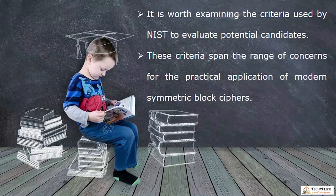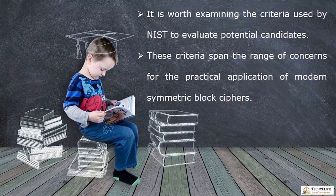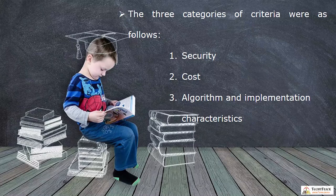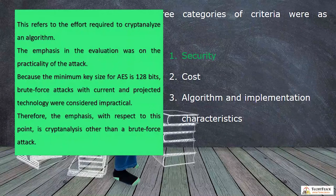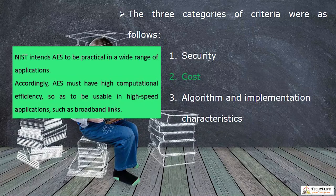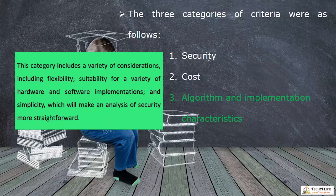AES Evaluation: It is worth examining the criteria used by NIST to evaluate potential candidates. These criteria span the range of concerns for the practical application of modern symmetric block ciphers. Three categories of criteria were used: security, cost, and algorithm and implementation characteristics. The algorithm should be usable in high-speed applications such as broadband links, and should be flexible and suitable for a variety of hardware and software implementations. It should also be simple to make security analysis more straightforward.